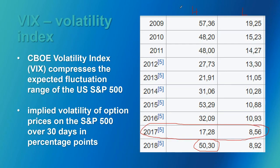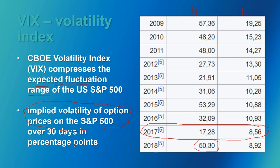Coming back to the definition of the Volatility Index: it shows how volatile the stocks of the S&P 500 are at a given moment. Going deeper into the definition, it shows the implied volatility of all option prices of the S&P 500 over the last 30 days, expressed in percentage points — essentially the expected rotation range of the S&P 500.